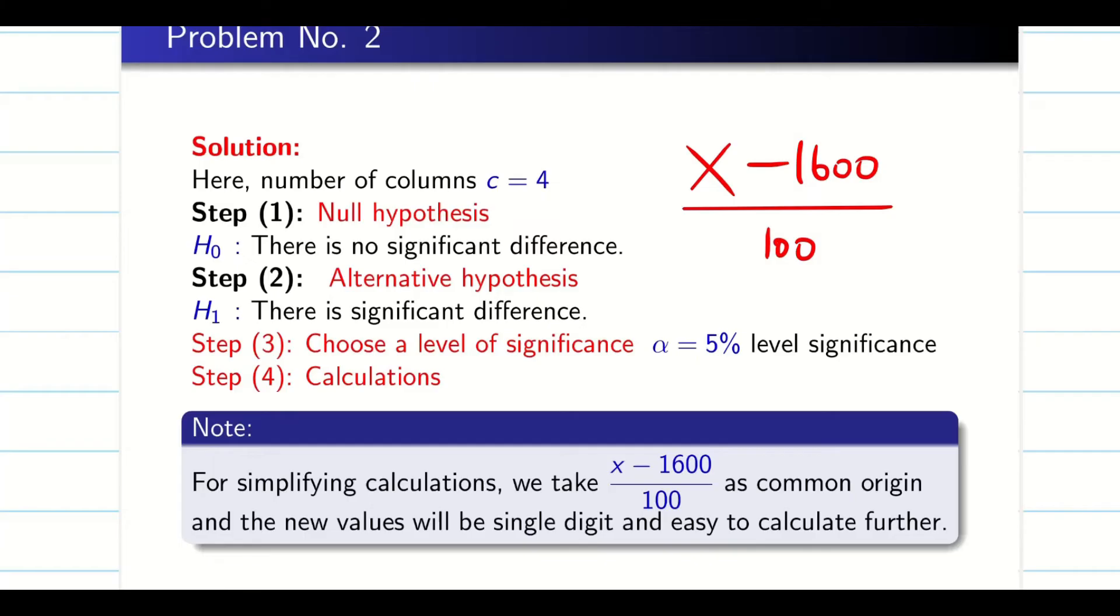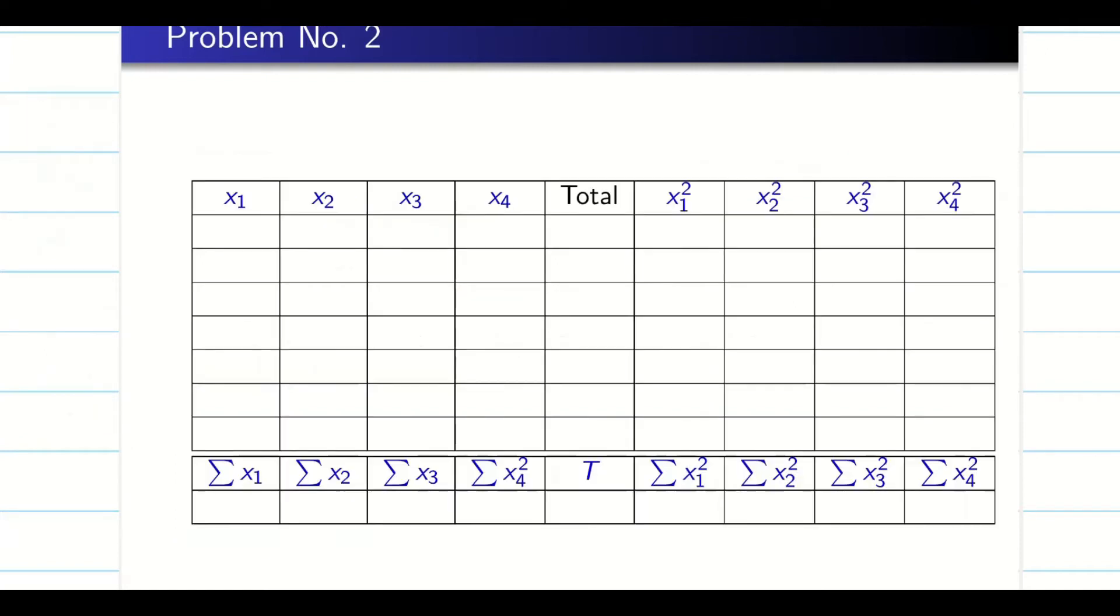See students, it is not mandatory that you have to take 1600. It is up to you. Either you can take 1600, 1500, or 1400, 1300. It does not matter. I take here 1600 because I will get some negative values also. While we sum it, the data is going to be very small. When I divide by 100, my data will be in single digits.